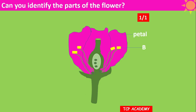If petal was your answer for A, then you are correct. What's B? If anther was your answer, then you are correct. And C — the filament.